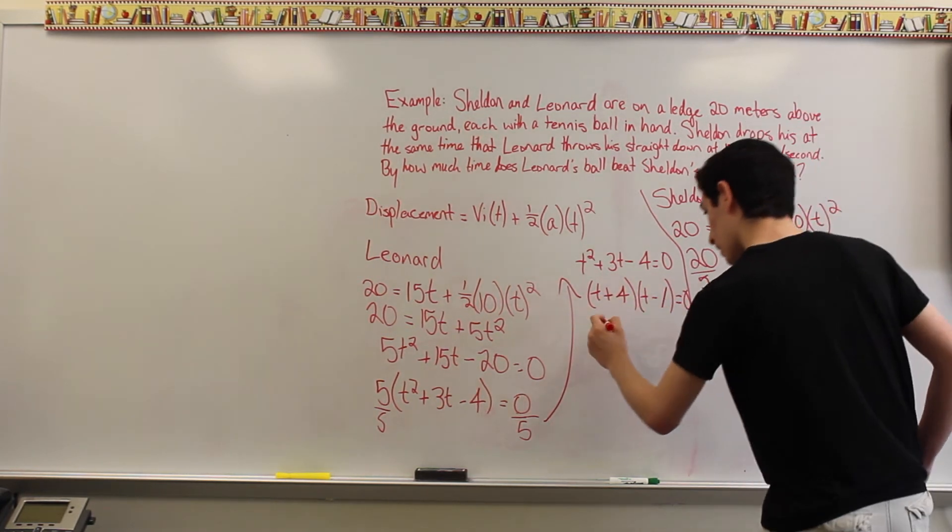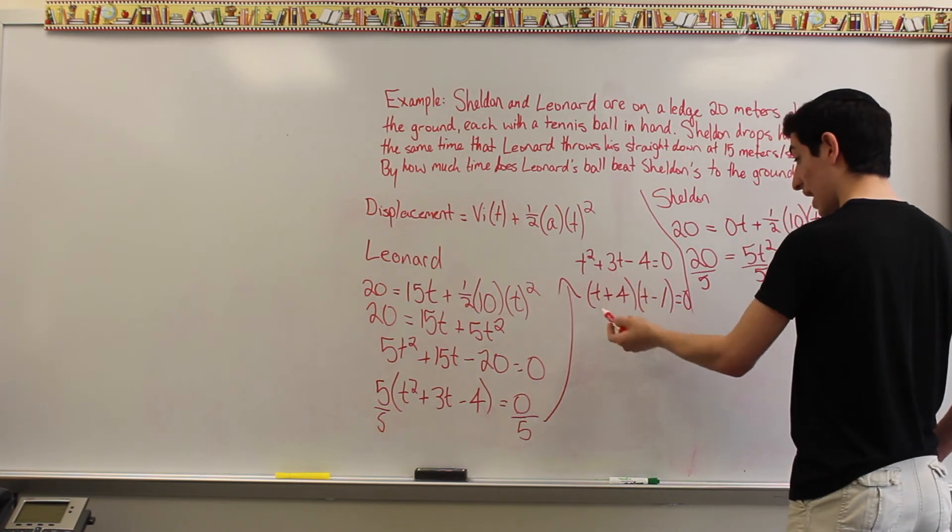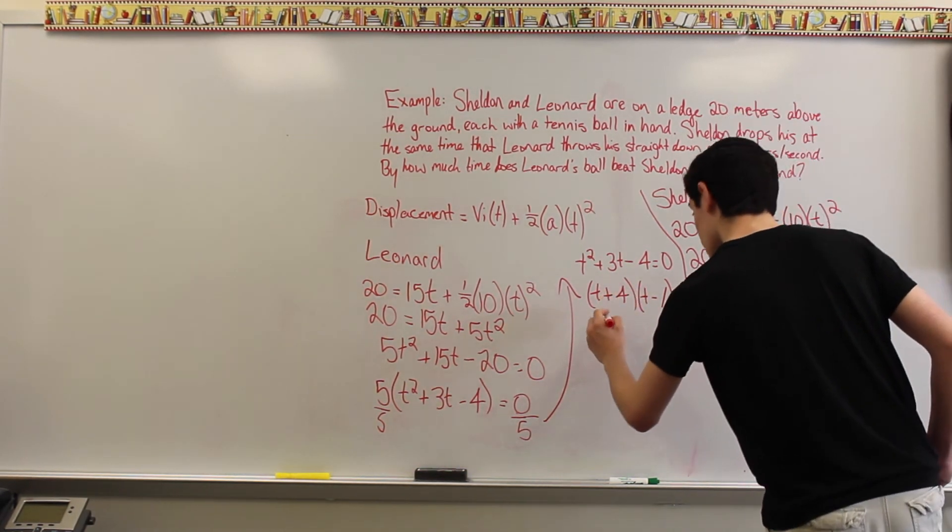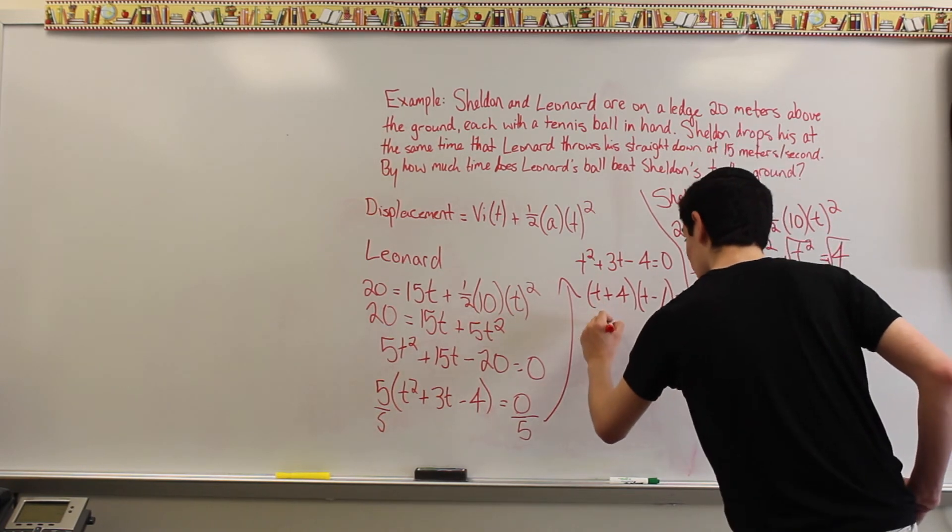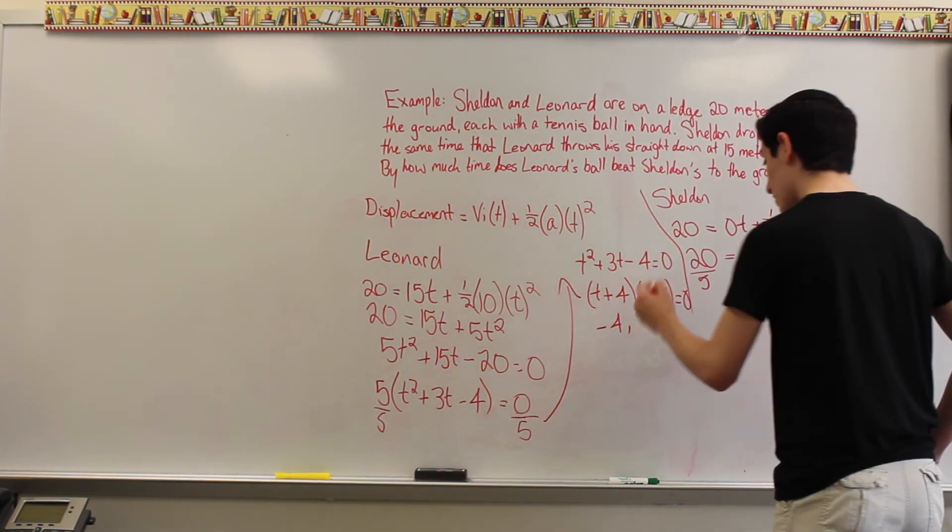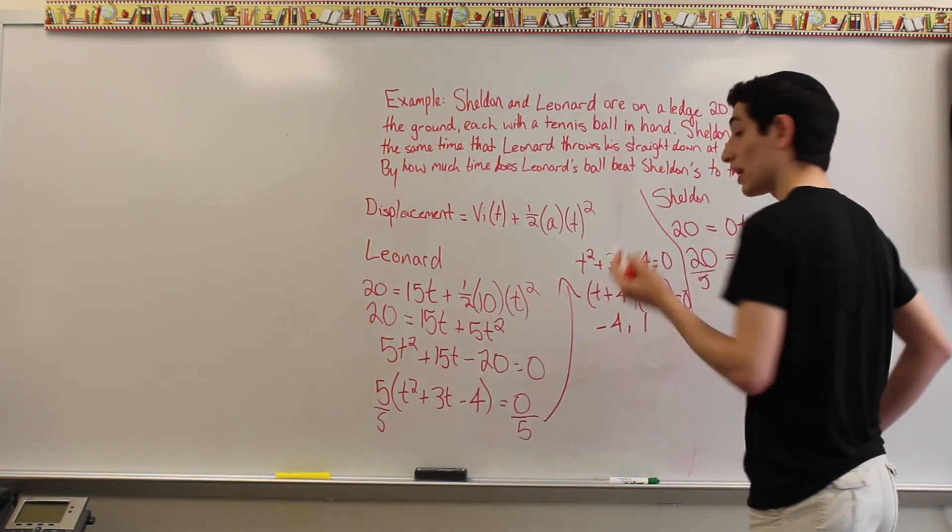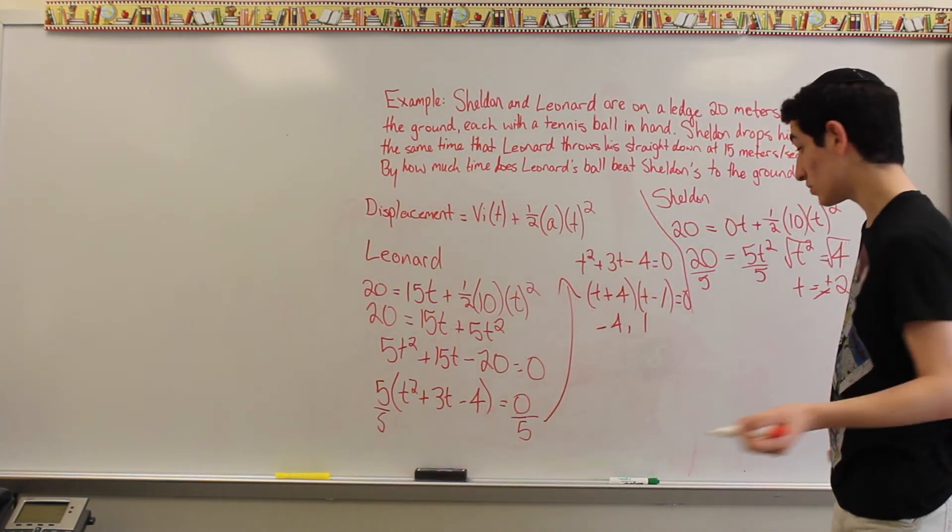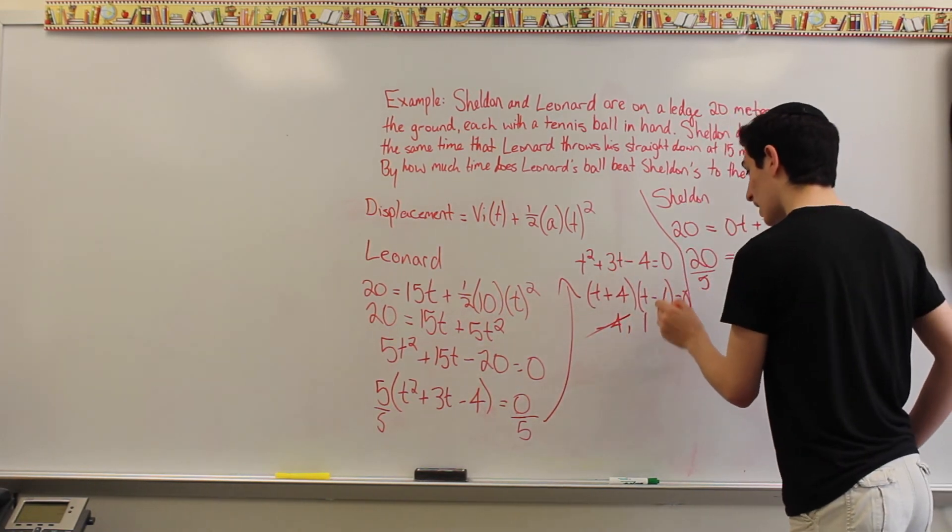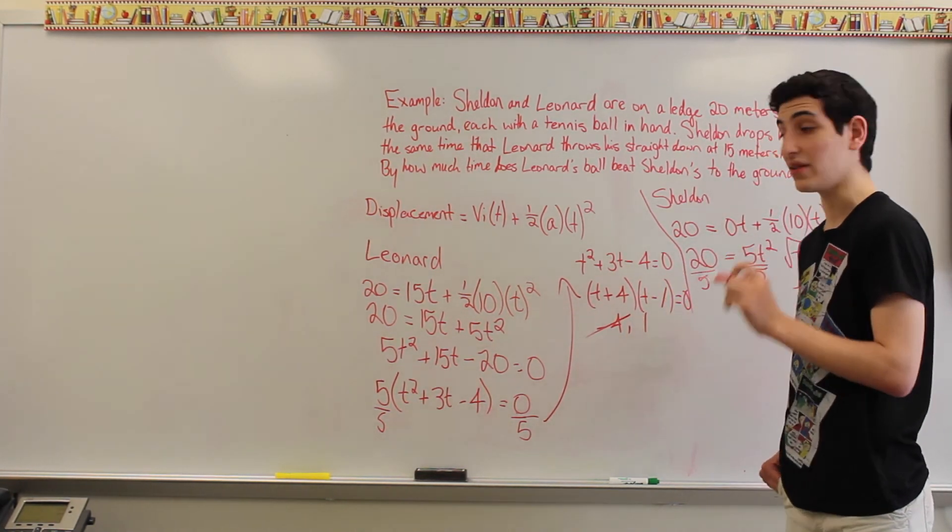So, then, if we separate them out and have each of these equal 0, t plus 4 equals 0, t being negative 4, and t minus 1 equals 0, making t 1. But, again, we can't have negative time, so we're just going to completely reject this root and take it as the time being one second in order to hit the ground.